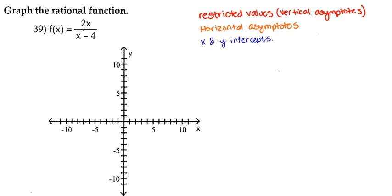First and foremost, let's find our restricted values. Restricted values are any values of x that don't exist in the equation. Since we have a rational function, the denominator can't equal 0. So we take the entire denominator, x minus 4, and set it equal to 0 to figure out what x can't be. When we solve for x, we get x equals 4, which means x can't be 4. On the graph, at x equals 4, we have a vertical asymptote.